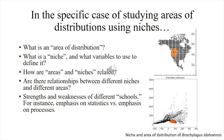For the purpose of people in this course — which is modeling areas of distribution on the basis of environmental constraints — the main questions are: what is an area of distribution? What do we mean by that? What is a niche? What do we mean by a niche and what variables do we use to define it? How are these two things related? Are there relationships between different niches and different areas? And what are the strengths and weaknesses of different schools? There are schools of distribution modeling and niche modeling that emphasize statistical approaches and others that emphasize processes. All these things, I hope, will be clarified at the end of this talk.